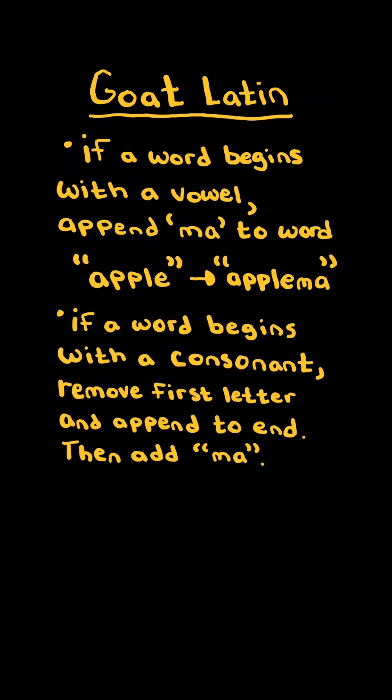If a word begins with a consonant, remove the first letter and append it to the end, then add the string M-A. For example, consider the word goat. It begins with a consonant, so we remove the G and append it to the end, and then add the string M-A.